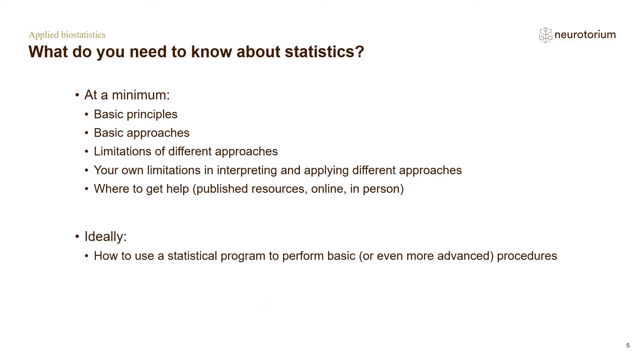What do you need to understand at a minimum? You need to understand some basic principles, and this program is designed to give you some of those tools. You need to know about basic approaches — both when to apply them and what the limitations are. You also need to know your own limitations and when to involve someone with more statistical knowledge, as well as where to go for help, whether a person at a department, an online resource, or an online calculator. We'll provide useful websites at the end of program four. Ideally, you could apply a statistical program to your data and do basic analyses of frequency, distribution, and simple statistical tests for group comparisons for continuous and categorical outcomes.